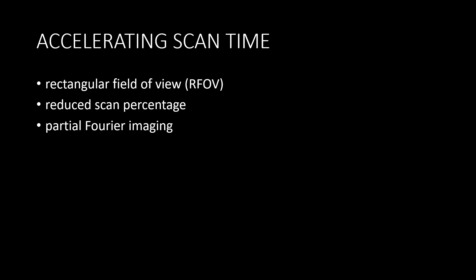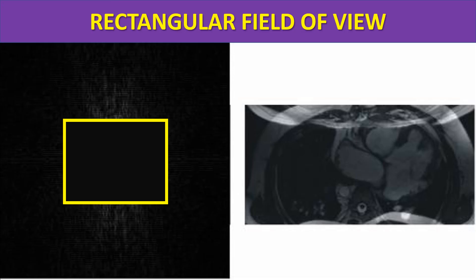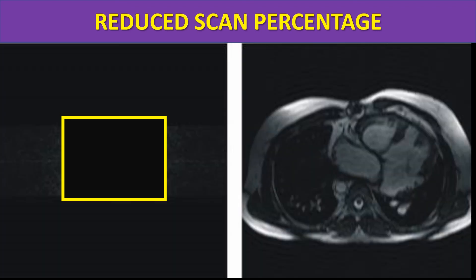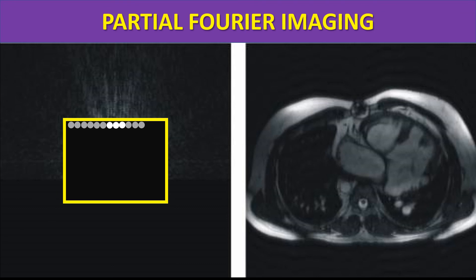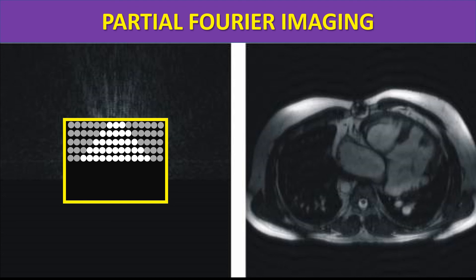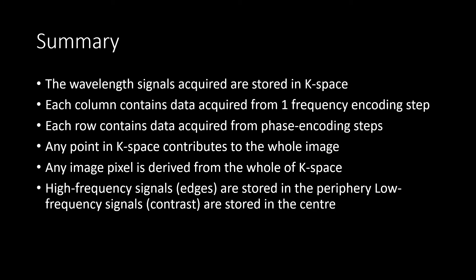K-space properties can be used to accelerate scan time. For example, we can fill only the middle of k-space and skip the periphery — this gives good contrast resolution but less spatial resolution. Another technique is partial Fourier transformation, where we fill only half of k-space and copy the rest using conjugate symmetry. This reduces scan time, though with slightly reduced quality.